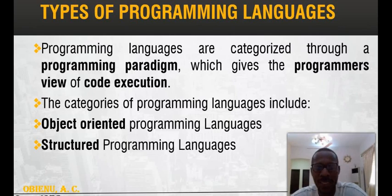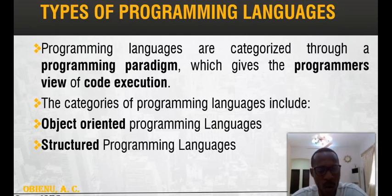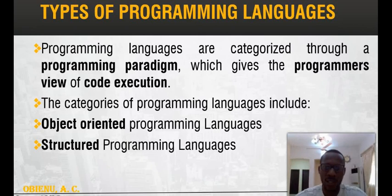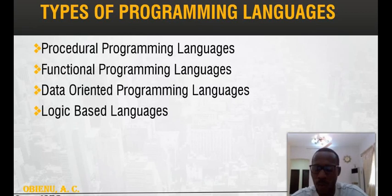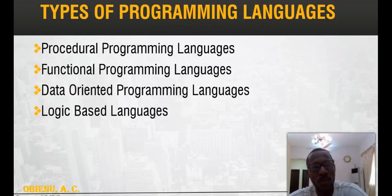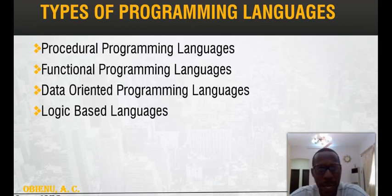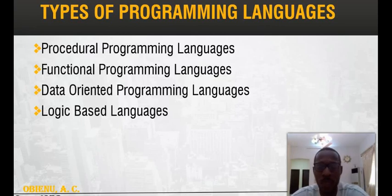These categories are classified into six. Number one, we have Object-Oriented Programming languages, which we call OOP. We have Structured Programming Languages, Procedural Programming Languages, Functional Programming Languages, Data-Oriented Programming Languages, and Logic-Based Programming Languages. Under these six classifications, we'll be looking at what they are and examples of languages that fall into each category.